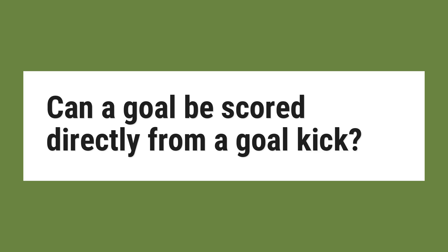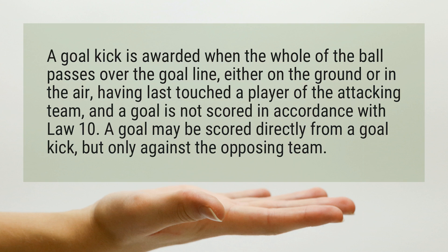Can a goal be scored directly from a goal kick? A goal kick is awarded when the whole of the ball passes over the goal line, either on the ground or in the air, having last touched a player of the attacking team, and a goal is not scored in accordance with Law 10.